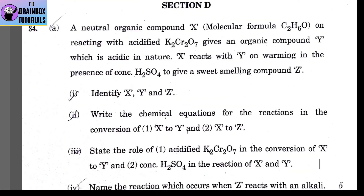Starting Section D, question 34, Part A. A neutral organic compound X with molecular formula C₂H₆O, on reacting with acidified potassium dichromate, gives an organic compound Y which is acidic. X is ethanol, Y is ethanoic acid, and Z is an ester — ethyl acetate (ethyl ethanoate) — formed when ethanol and ethanoic acid react in the presence of hot concentrated H₂SO₄.